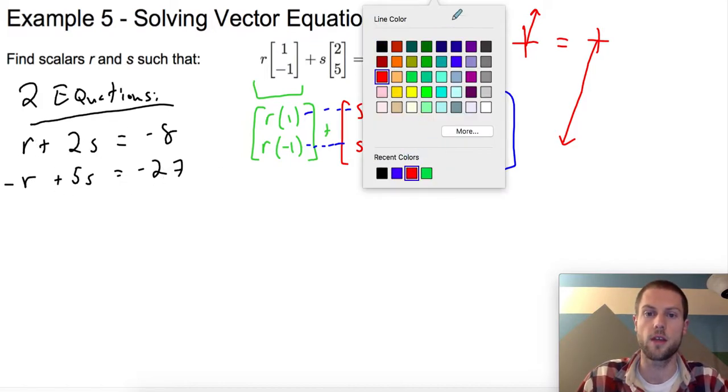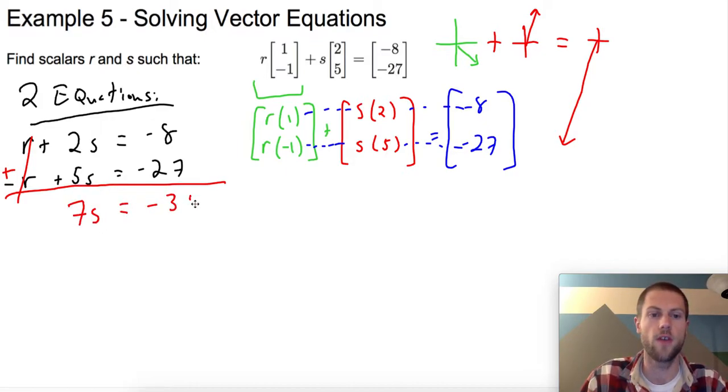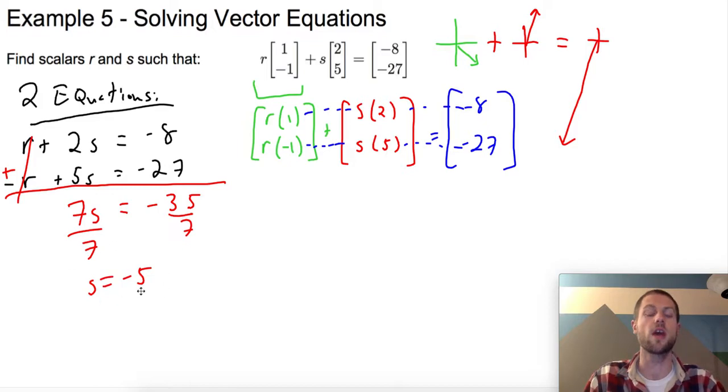And what's nice about this is I can use elimination to get rid of these r's. I'm just going to add these up. That's kind of convenient. It's almost like I planned it that way. We're going to add these two equations. That's going to cancel out my r's. And I have 7s equals -35. Hey, this is nice. I divide by 7. s is going to equal -5.